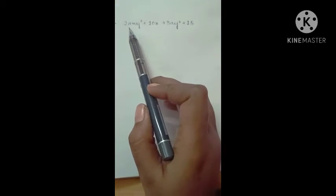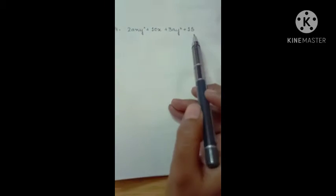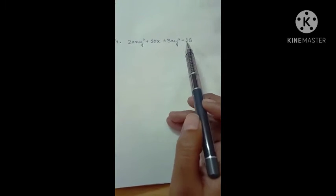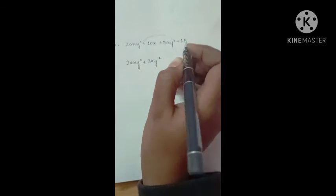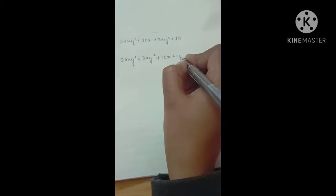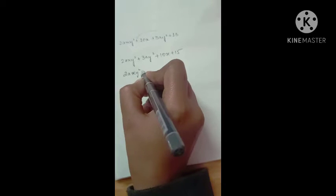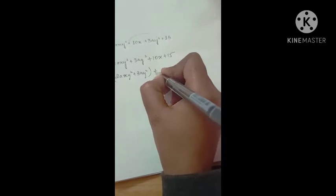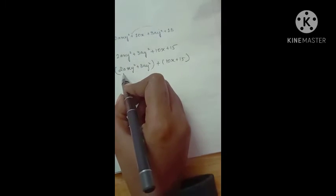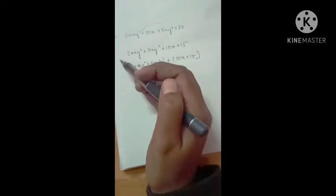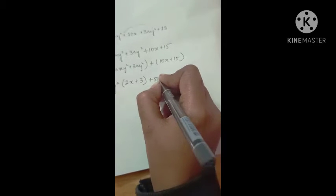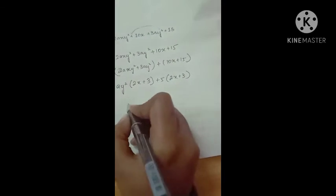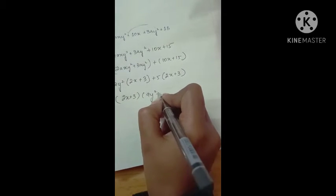Question 4: 2axy² + 10x + 3ay² + 15. First, we rearrange by moving 3ay² next to 2axy², giving us (2axy² + 3ay²) + (10x + 15). We group these terms. From the first group, ay² is common, giving ay²(2x + 3). From the second group, 5 is common, giving 5(2x + 3). Taking (2x + 3) as common, we get (2x + 3)(ay² + 5).